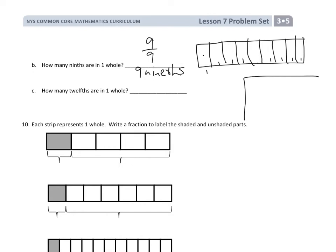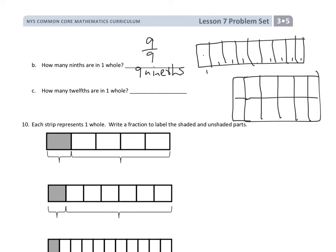And how many twelfths are in one whole? So you could do the same thing. We can cut that in half — that gives us two pieces — then four, six, eight, ten pieces, and we'll add another two to make it twelve. Twelve pieces. So this is one whole cut into twelve pieces. There are twelve twelfths, which we can write as twelve over twelve is one whole, or twelve twelfths is one whole.